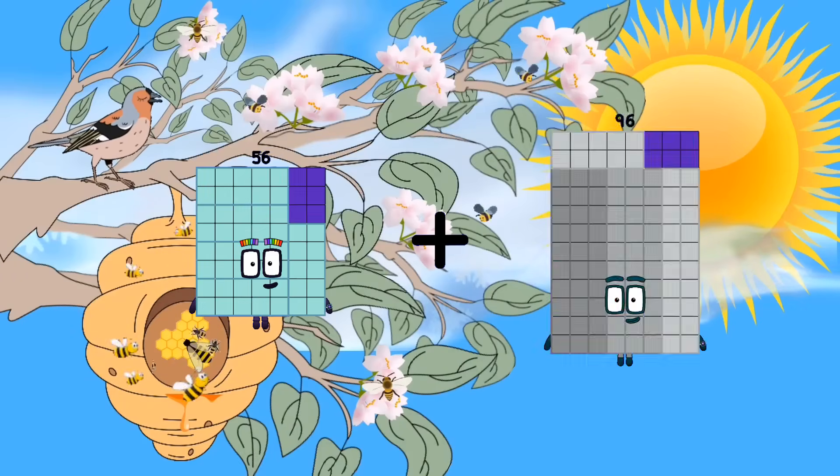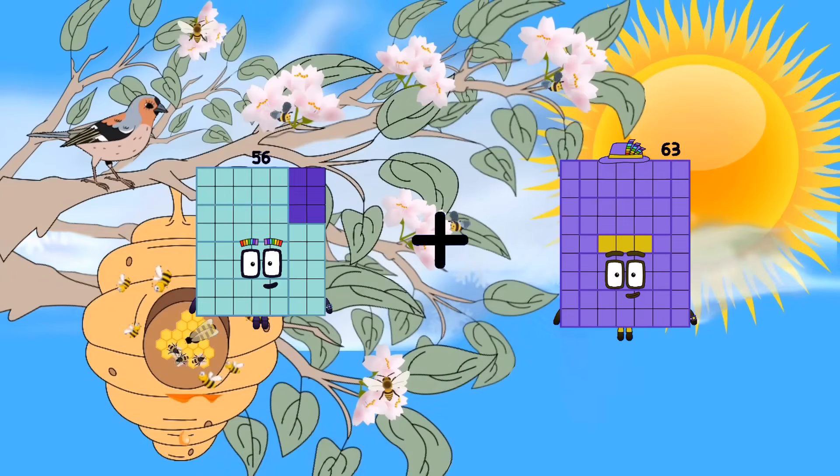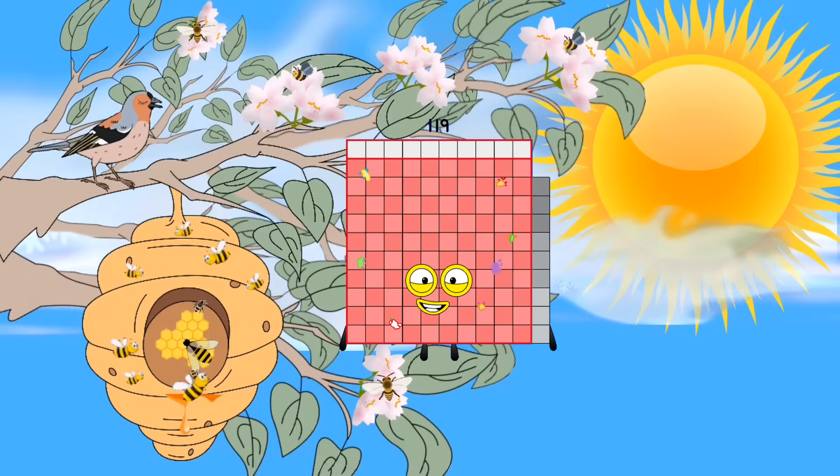Fifty-six plus sixty-three equals one hundred nineteen.